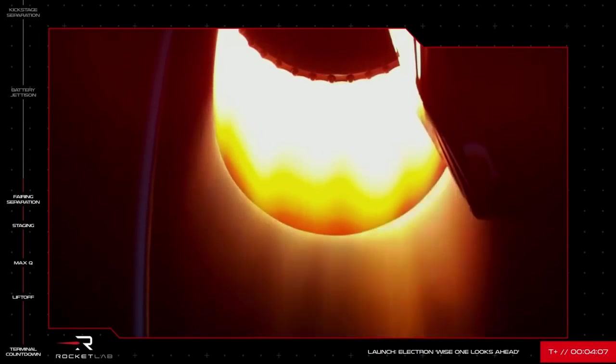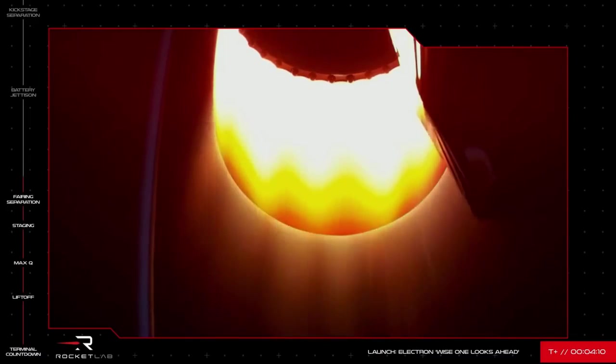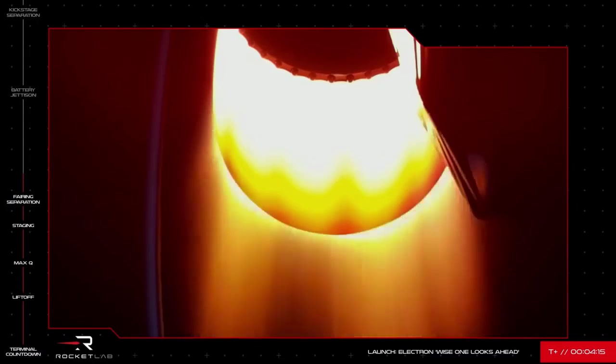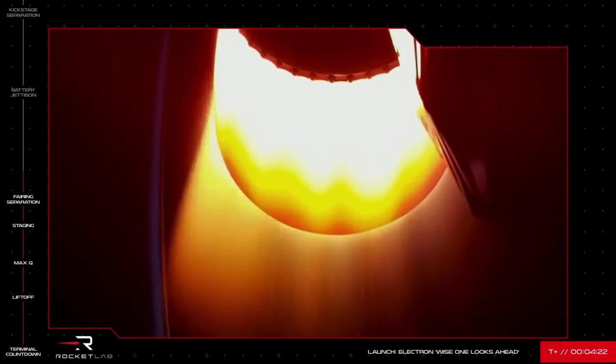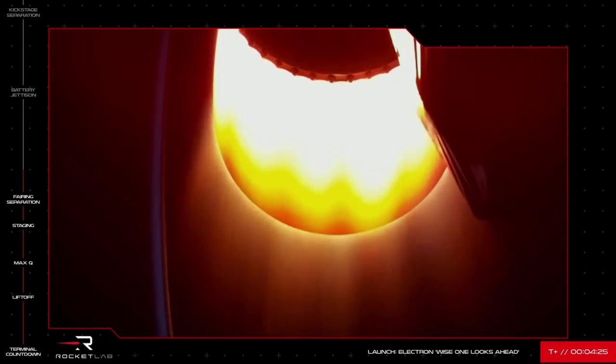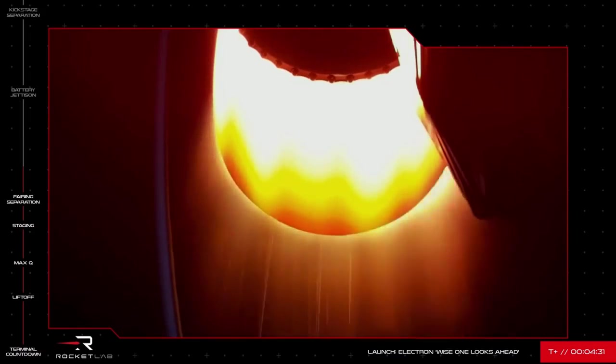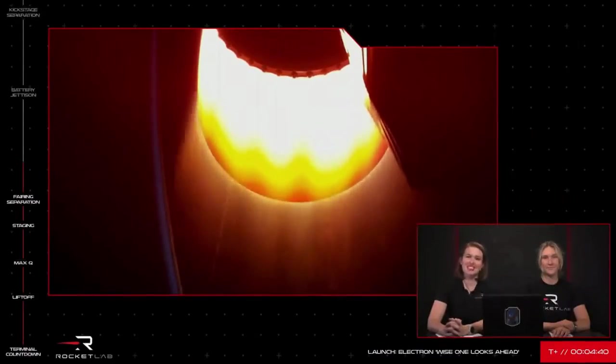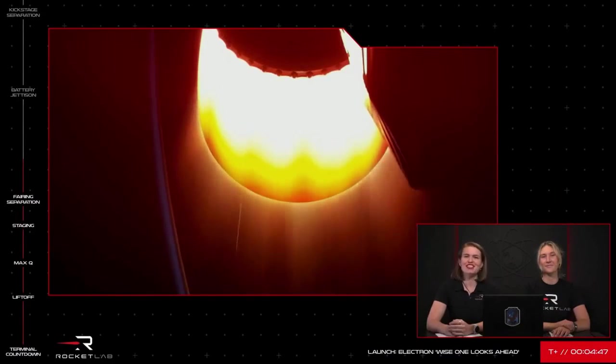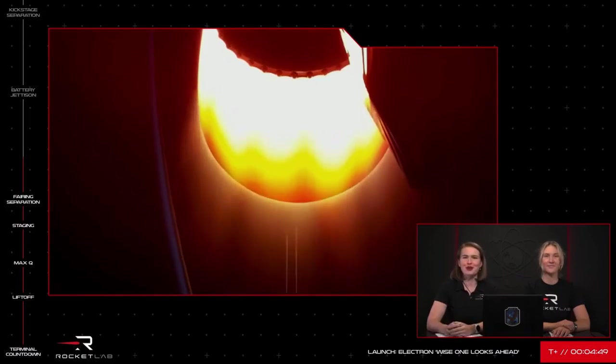At about 10 minutes into the mission, the kick stage will separate and its Curie engine will precisely deliver the payload to its intended orbit. The shape of an orbit is important. In fact, the entire Capstone mission we launched last month is to test the efficiency of the near-rectilinear halo orbit, or NRHO, around the Moon.